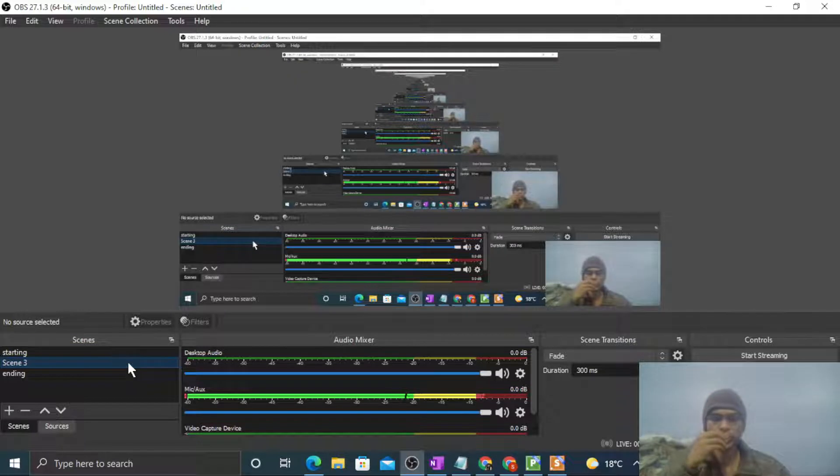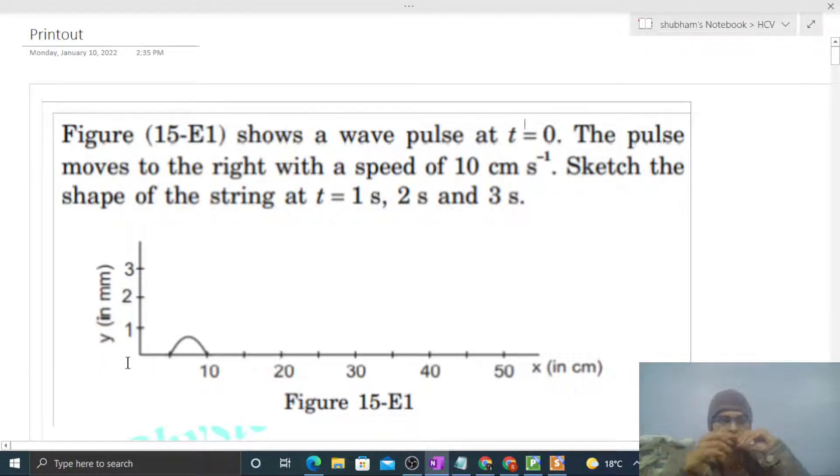Okay, hi everyone. So today let's discuss one interesting problem. It says figure shows a wave pulse at t equals 0. The pulse moves to the right with a speed of 10 cm per second. Sketch the shape of the string at t equals 1 second, 2 seconds, and 3 seconds.